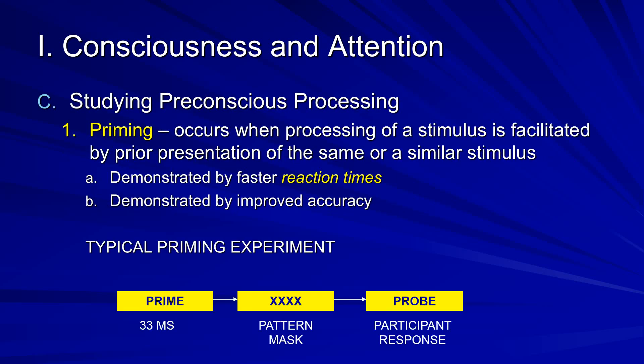There are a variety of ways that we study what we call pre-conscious processing, or attention without awareness. The first of these is a fairly standard cognitive psychology paradigm referred to as priming. This occurs when processing of a stimulus is facilitated by a prior presentation of the same or similar stimulus. We demonstrate that priming has occurred generally by faster reaction times and improved accuracy in these kinds of experiments.